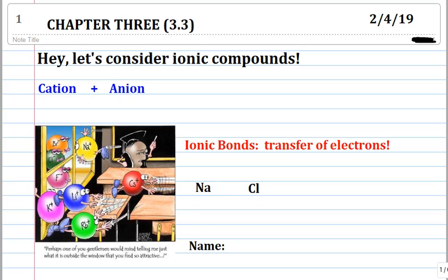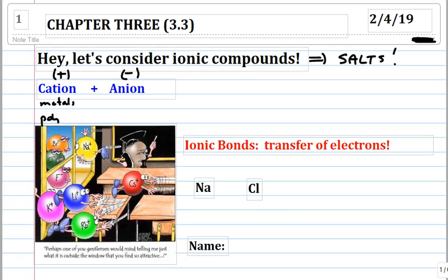Let's consider ionic compounds — we're also going to call ionic compounds a term that I'm sure you've heard of: salts. Salts, or ionic compounds, are made from a cation, which is positively charged — it could be +1, +2, +3, for example — and an anion. The cation can come from metals or a polyatomic ion.